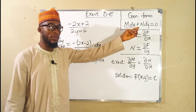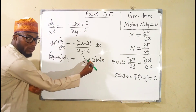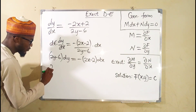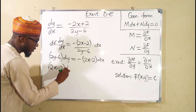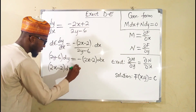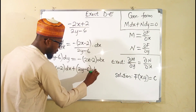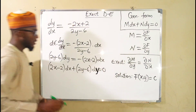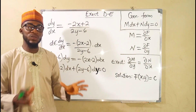This is still not in the standard form. We take this term to the left-hand side — since it is negative, once it crosses over it becomes positive. We have 2x minus 2 dx plus 2y minus 6 dy equals zero. Now our equation is written in the standard form.